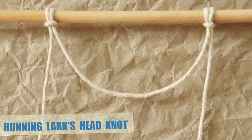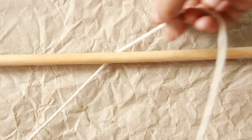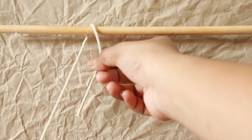For running lark's head knot, which is commonly used for layering wall hangings, you will need a longer piece of cord. Slide your cord from up and behind your wooden dial.